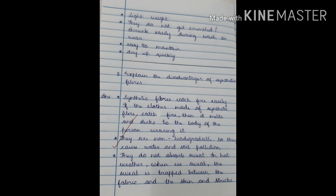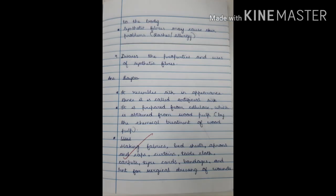Eighth question: explain the disadvantages of synthetic fibers. Synthetic fibers catch fire easily. If clothes made of synthetic fiber catch fire, they melt and stick to the body of the person wearing them. They are non-biodegradable, so they cause water and soil pollution. They do not absorb sweat — in hot weather, when we sweat, the sweat is trapped between the fabric and the skin and sticks to the body. Synthetic fibers may also cause skin problems such as rashes and allergies.